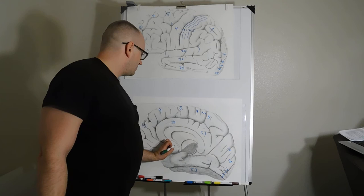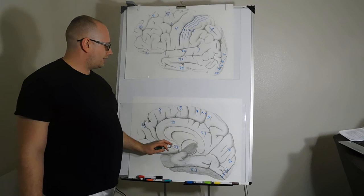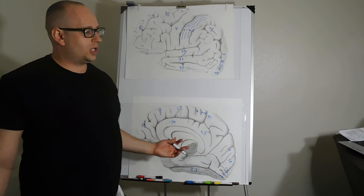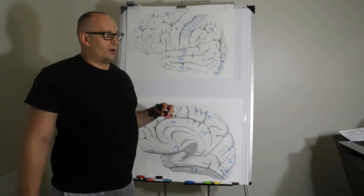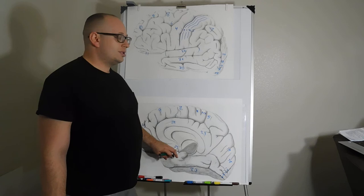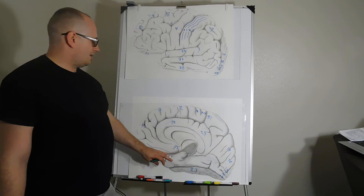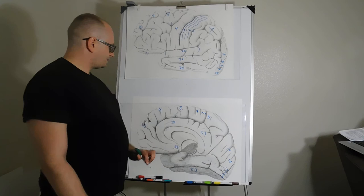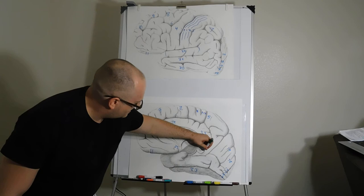Brodmann area 25 is in your para-olfactory cortex, also called the subgenual area, below the genu of the corpus callosum. It may be relevant to depression — when you take SSRIs, SNRIs, or tricyclic antidepressants, you're probably inhibiting serotonin transporters in this area, including 5-HT2A and 2C receptors, keeping serotonin in the synapse. This area is important for mood, hunger, and depression.